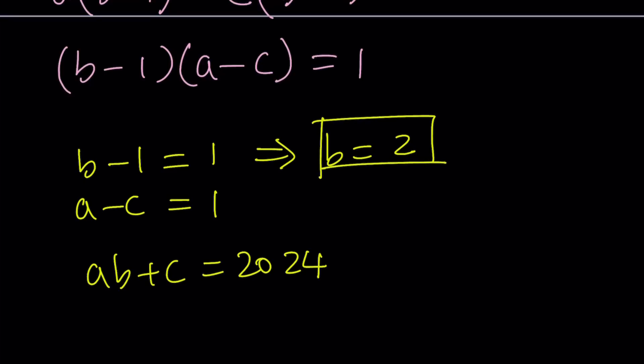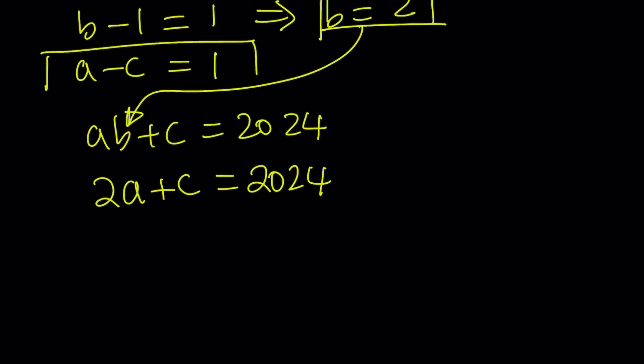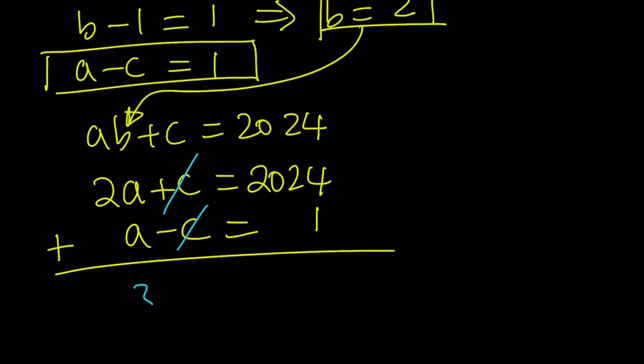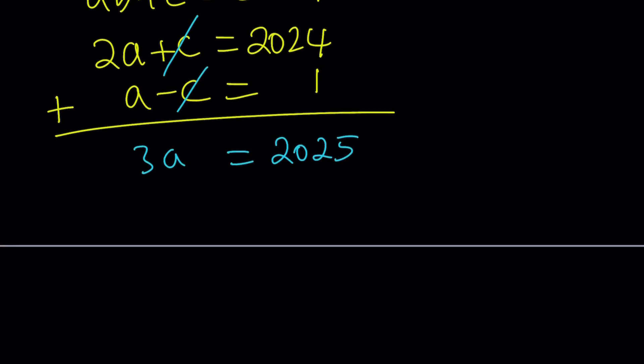B is 2. I know that. So, I'm going to go ahead and replace this B with 2. That's going to give me 2A plus C equals 2024. And then we have another equation. That gives me a nice system. We can go ahead and add these equations and eliminate C. 3A equals 2025. Do you think 2025 is divisible by 3? Yes. Divisible rule tells us 2 plus 2 plus 5 is 9. So, it's divisible.